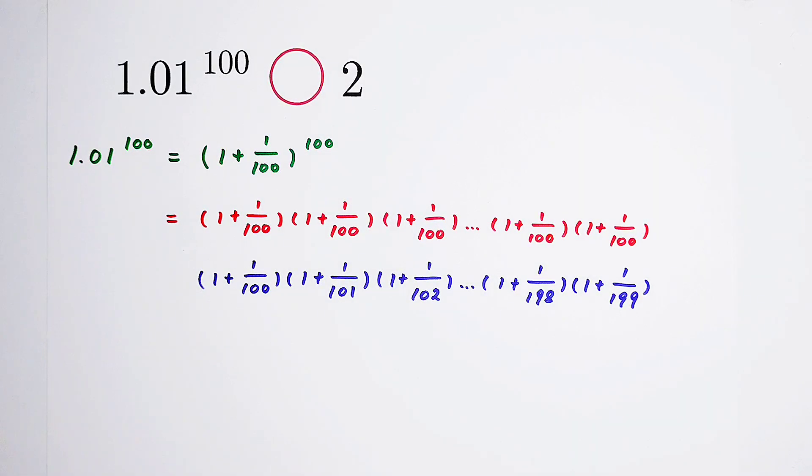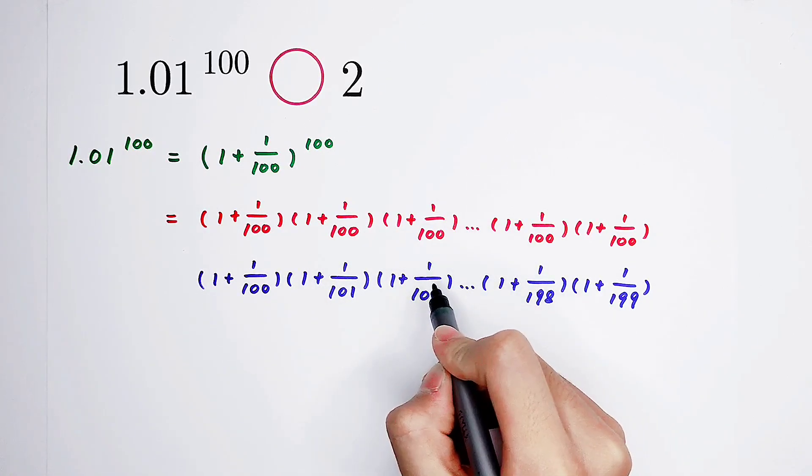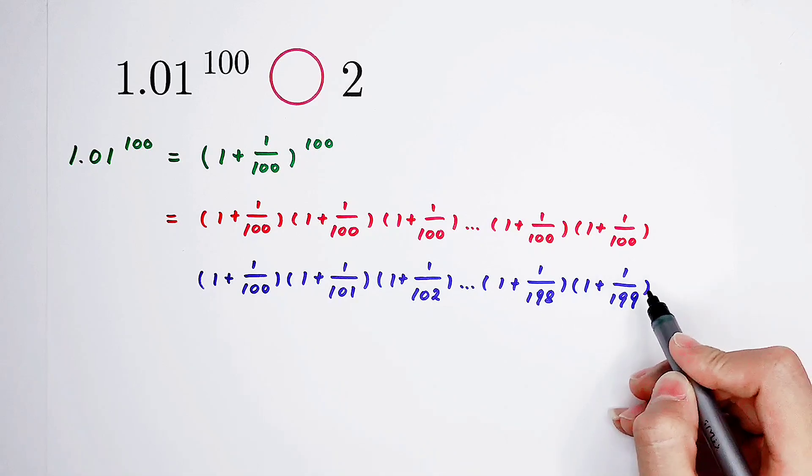Have a look at it. Except for the first factor, every factor here has a greater denominator than here. However, they have the same numerator. Now, two fractions, their numerators have the same value. Their denominators don't. So the fraction with the smaller denominator will be bigger. And the fraction with the bigger denominator will be smaller. So what does it mean? So that means 1 over 100 is bigger than 1 over 101. It is also bigger than 1 over 102. Until it is bigger than 1 over 199.